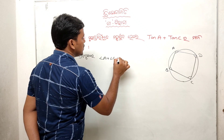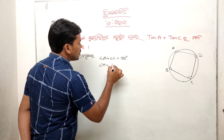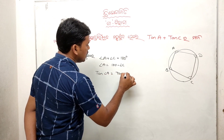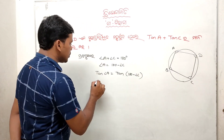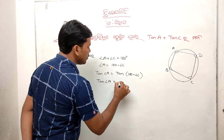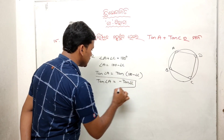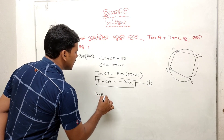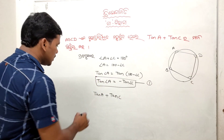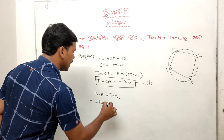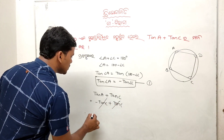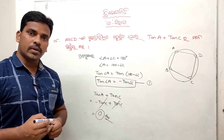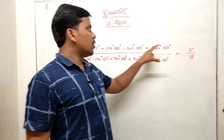Angle A plus angle C equals 180 degrees, so angle A equals 180 minus angle C. Therefore tan A plus tan C equals tan(180 minus C) plus tan C, which equals minus tan C plus tan C, which equals 0. So the answer is 0. Problem number 15 is done. Now problem number 16.